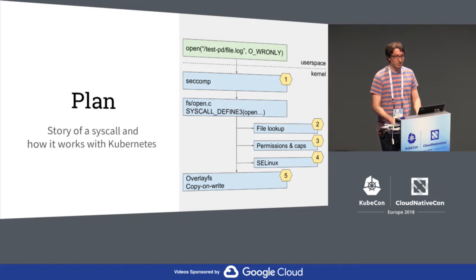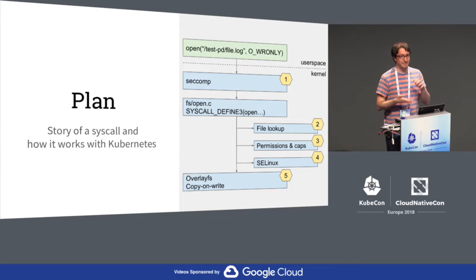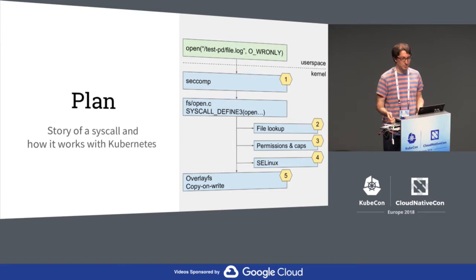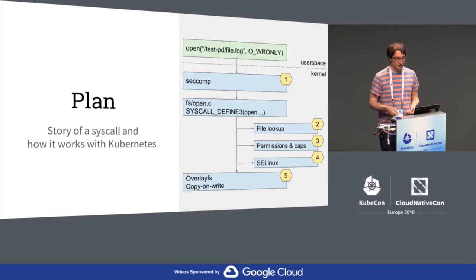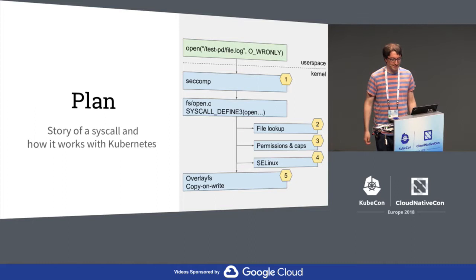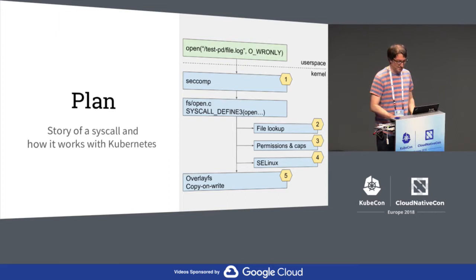The plan today is to talk about a system call and go through different layers in the Linux kernel to talk about different container mechanisms. I will talk about the open system call where we open a file with a write mode and go through different layers like seccomp to filter system calls, to the implementation of the open system call and do the file lookup. We will talk about permissions and capabilities, SELinux, and in the end about OverlayFS.